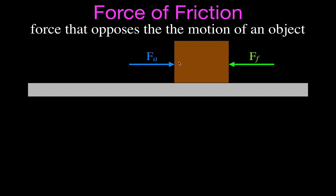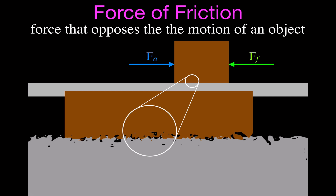Where does the friction force actually come from? An object and surface may look smooth, but if you look very carefully, they're not really that smooth — they're kind of rough. It's those little edges, corners, and bumps that get hooked on to each other. I think of it like Velcro — those two edges get caught on each other, and that is where the force comes from. The friction force comes from the interaction of those two surfaces, the sticking together of those two surfaces. From those two surfaces rubbing together, we get sound, heat, and vibration — some of the energy is lost when you push the two objects past each other.